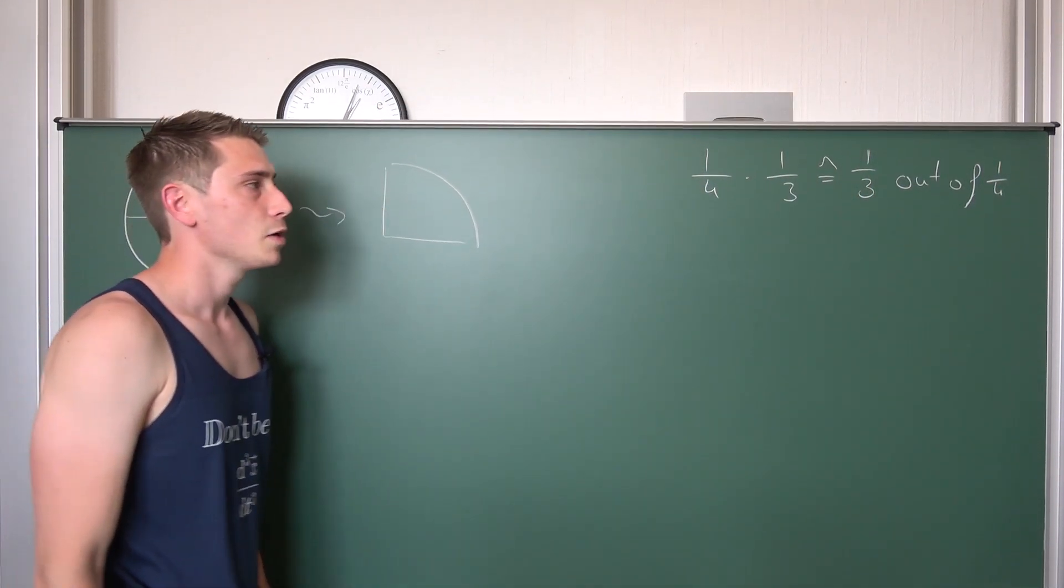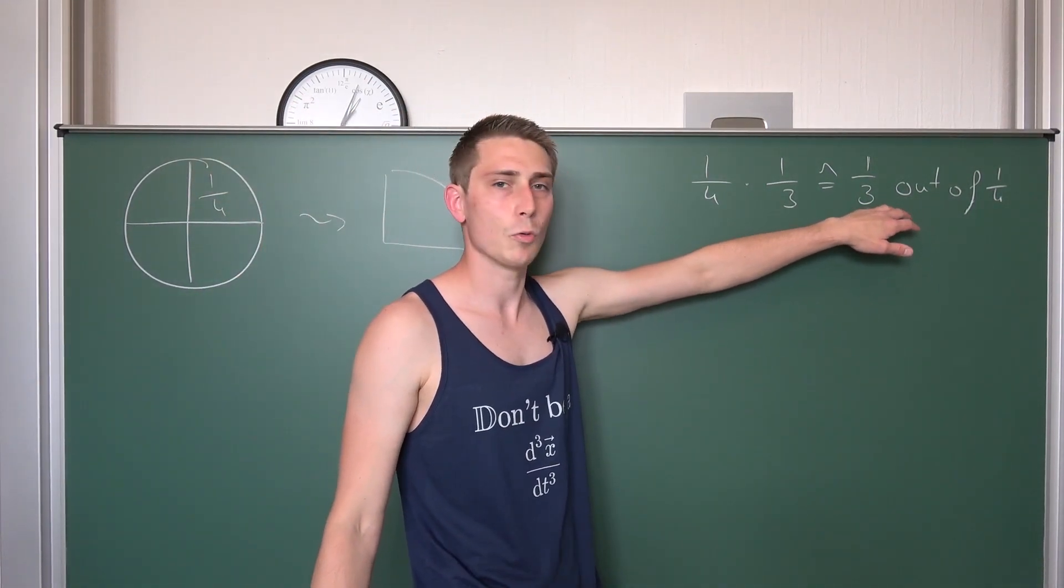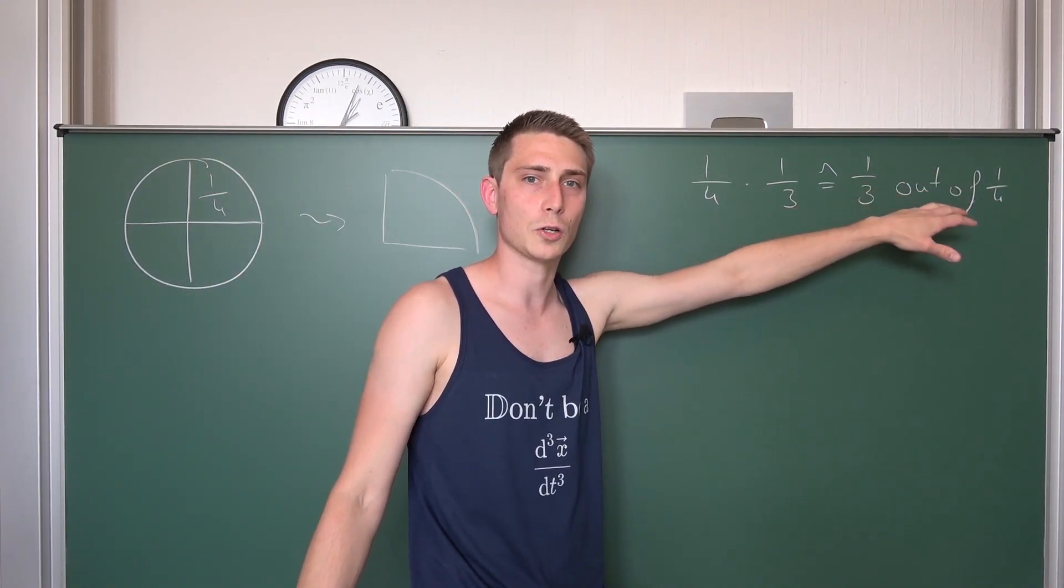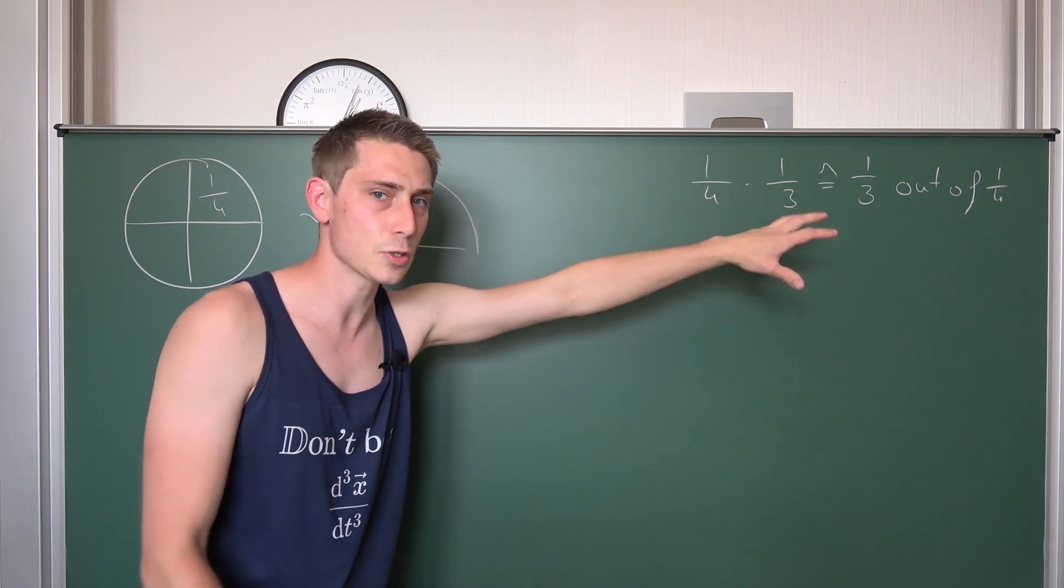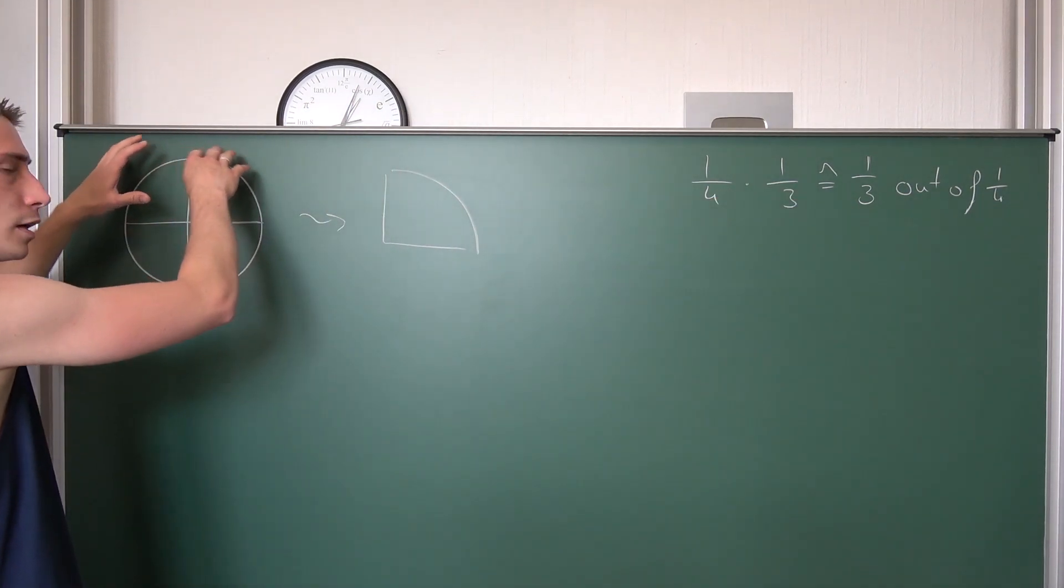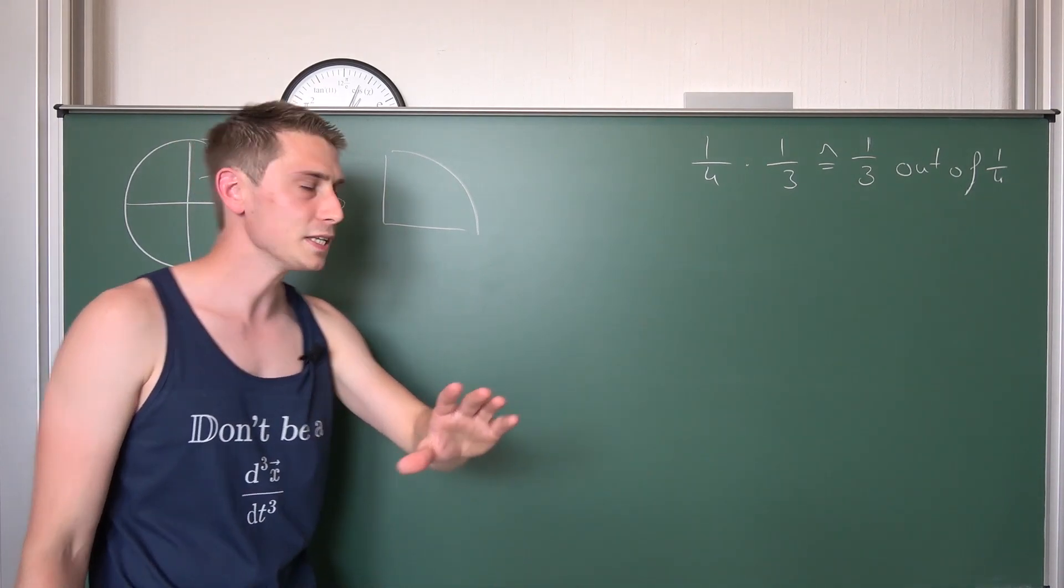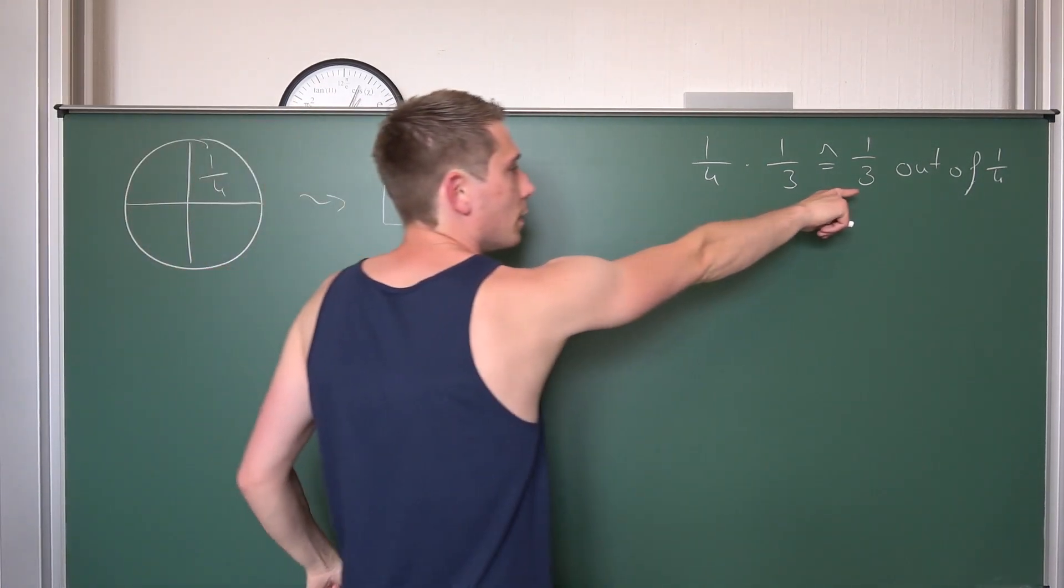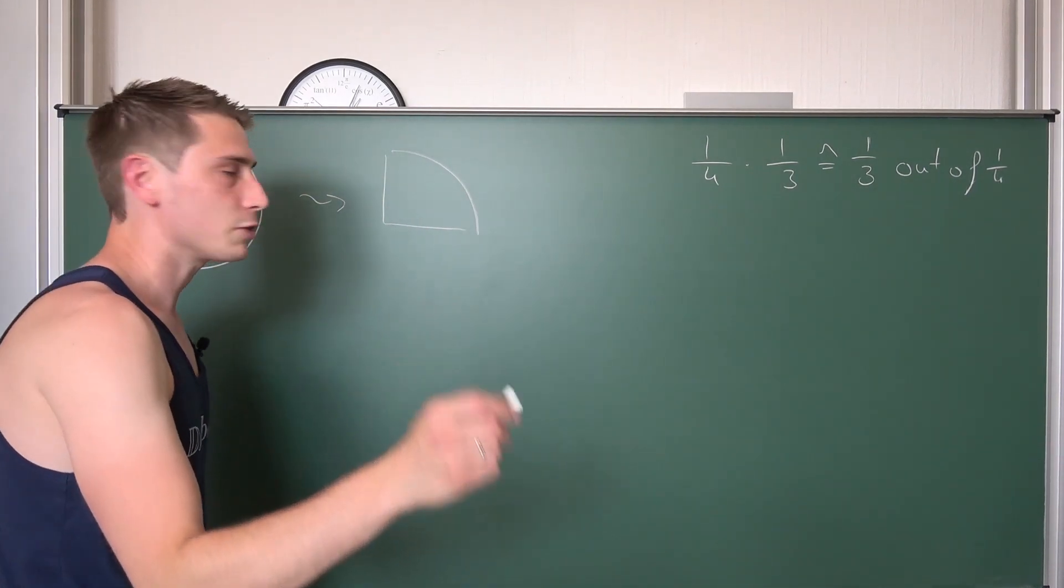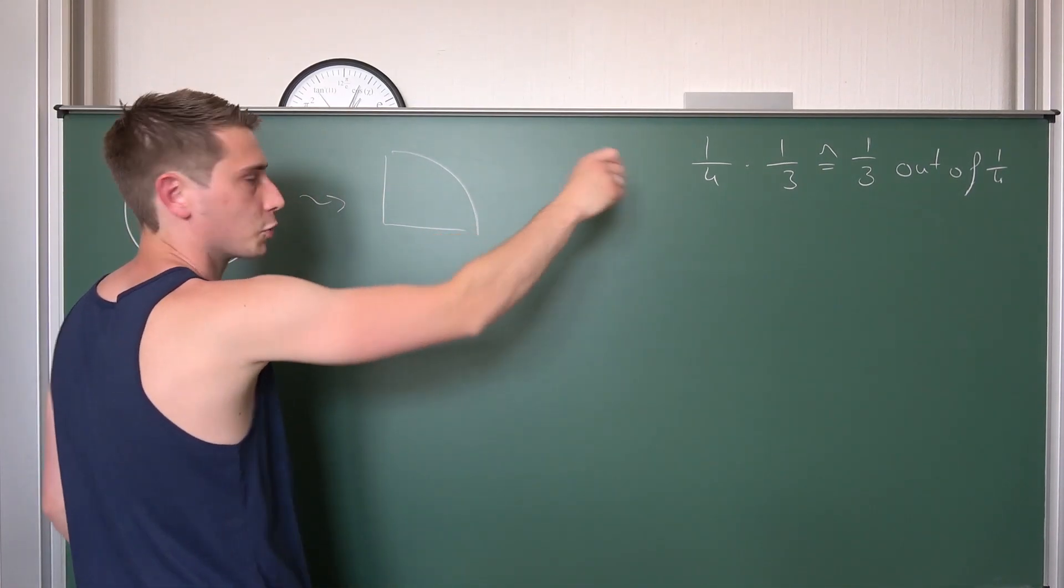This is what it basically means. What does it mean to have one third out of one quarter? How can you translate this question into parts of a whole thing, of a whole cake? What it means, we are going to dive right in now. So, at first we are going to take a look at one third of a quarter.